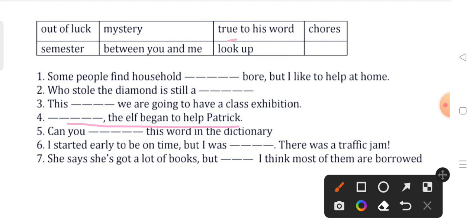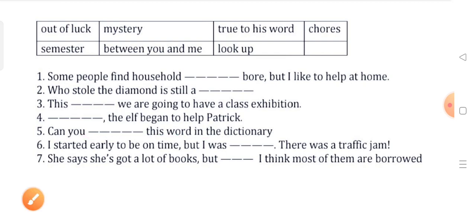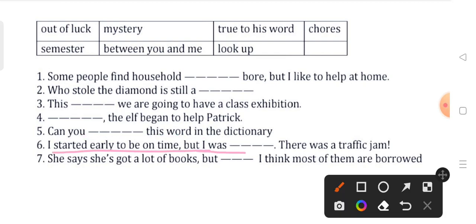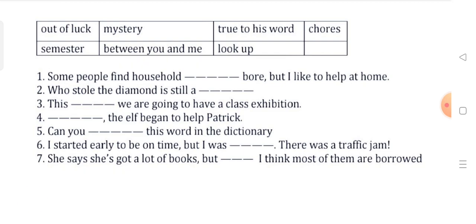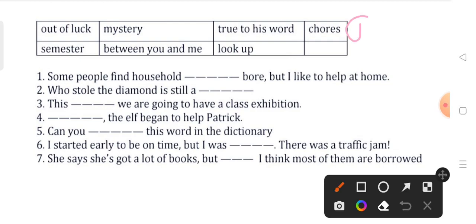Can you look up this word in the dictionary? The answer is look up. I started early to be on time, but I was out of luck, there was a traffic jam. She says she's got a lot of books, but between you and me, I think most of them are borrowed. So first answer is chores, second is mystery, third is semester, fourth is true to his word, fifth is look up, sixth is out of luck, and seventh is between you and me.